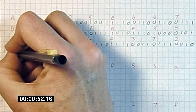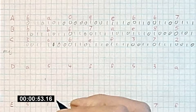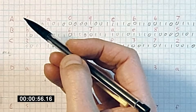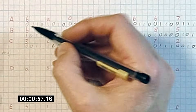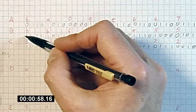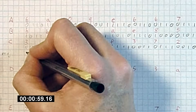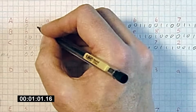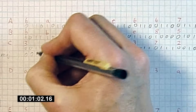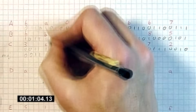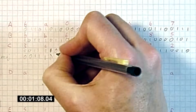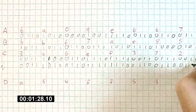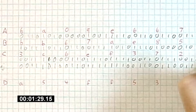The majority function means we look at each of the three bits and see whether there are more zeros or ones. For example: 010 — more zeros; 100 — more zeros; 111 — ones win; 011 — ones win; then 1, 1, 0, 1.